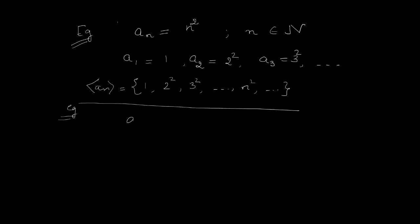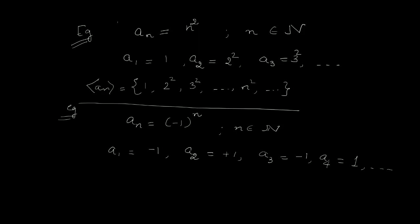Now just see one more example. Let's suppose the nth term is given as (-1)^N, where N is a natural number. When you put N=1, A1 = -1. When you put N=2, A2 = +1, A3 = -1, A4 = +1, and so on. So your sequence is -1, 1, -1, 1, -1, 1, and so on.